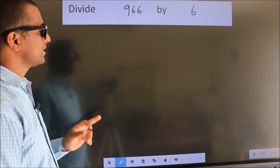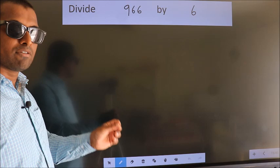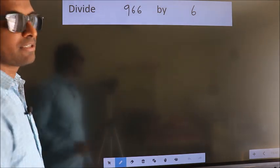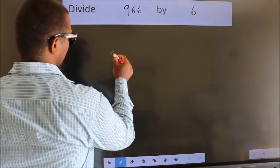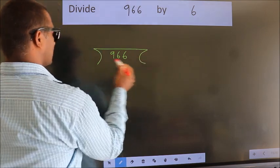Divide 966 by 6. To do this division, we should frame it in this way. 966 here, 6 here.